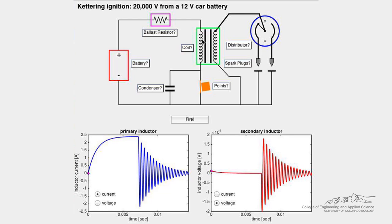When the points open, the circuit changes to an RLC circuit, and current through the primary inductor abruptly changes.